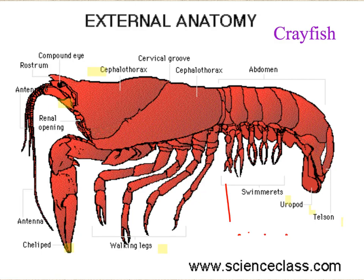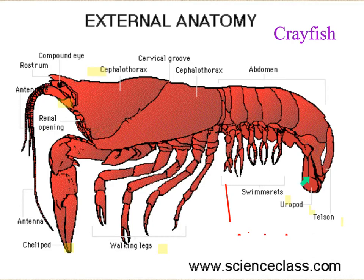Moving on to our crayfish. With the crayfish, we can see the compound eyes. The nose is called the rostrum. The body is divided into two regions: the cephalothorax and the abdomen. We have the chelipeds as the pinchers, the walking legs as our pereiopods, the swimmerets as the pleopods, the uropods on either side, and in the middle, the telson.